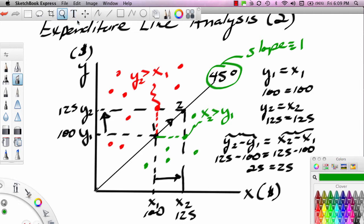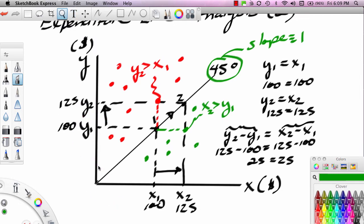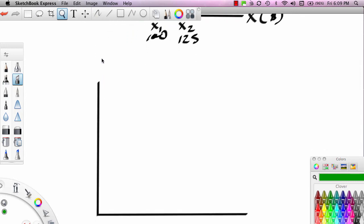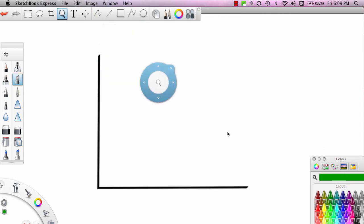Now, let's go ahead and move down, and we want to apply this to our expenditure line and to expenditure line analysis. Now, our y variable in expenditure line analysis is total planned expenditures. Our x variable in expenditure line analysis is GDP.